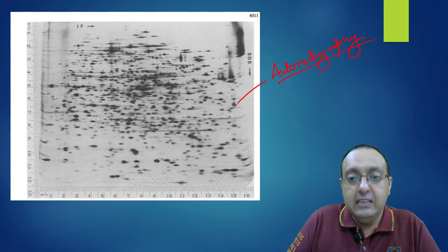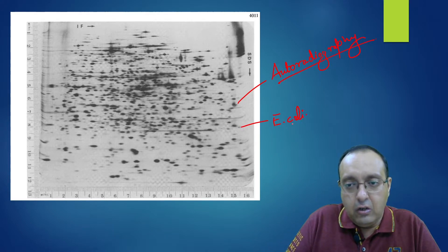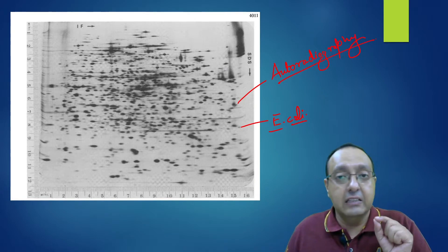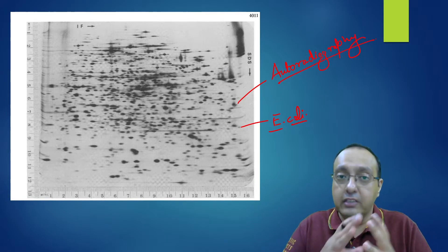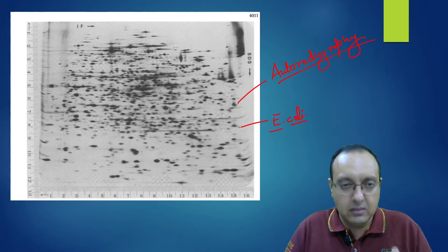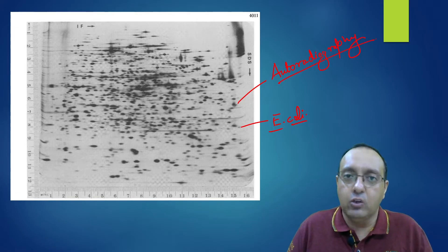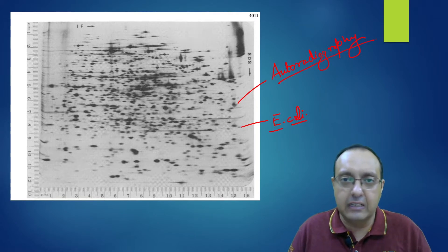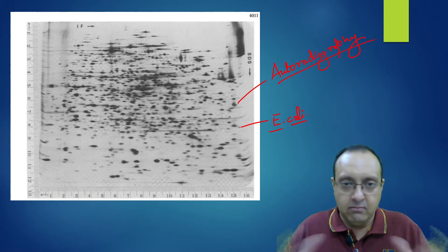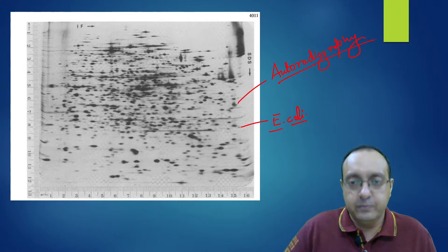Here you can see the E. coli proteins. This is actually from the O'Farrell paper we just looked at — this is the complete complement of E. coli proteins. You can see the whole complexity of proteins expressed in E. coli. Remarkable complexity — just one single bacterium expresses so many varieties of different proteins.